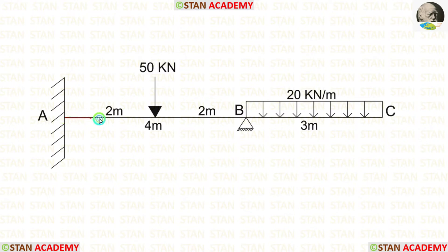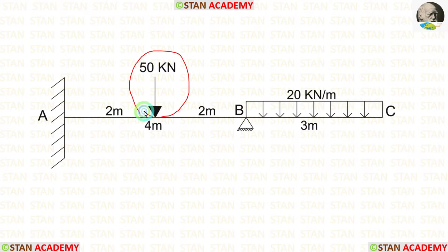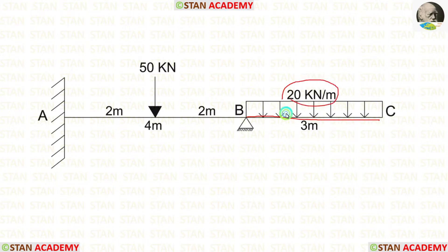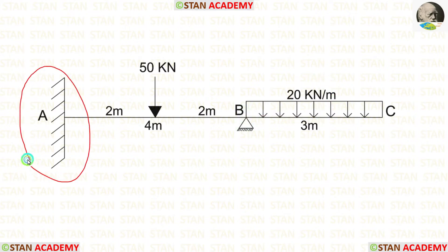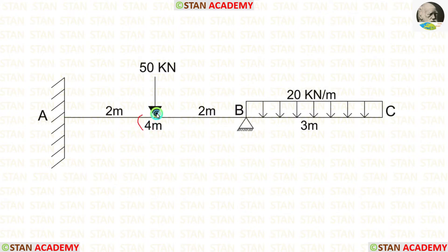In this beam, there is a span AB and an overhanging span BC. In span AB, there is a point load of 50 kN acting at the center. In the overhanging span BC, there is a uniformly distributed load of 20 kN per meter. Point A has a fixed support and point B has a hinged support. Span AB is 4 meters long and the overhanging span BC is 3 meters long.